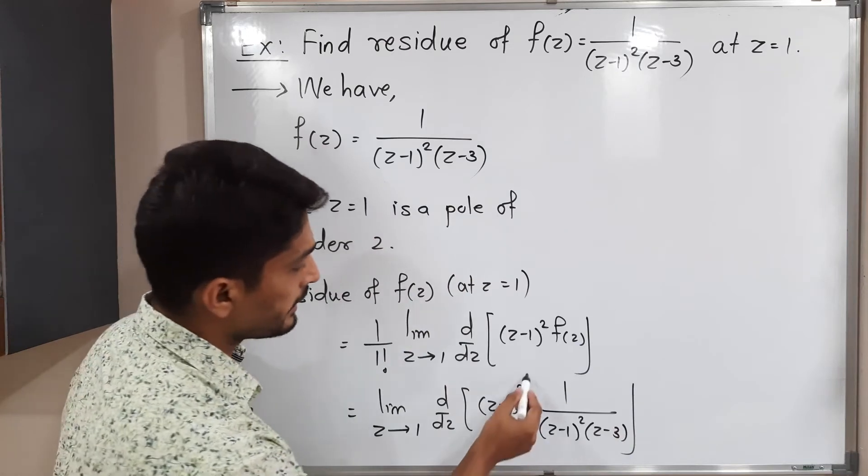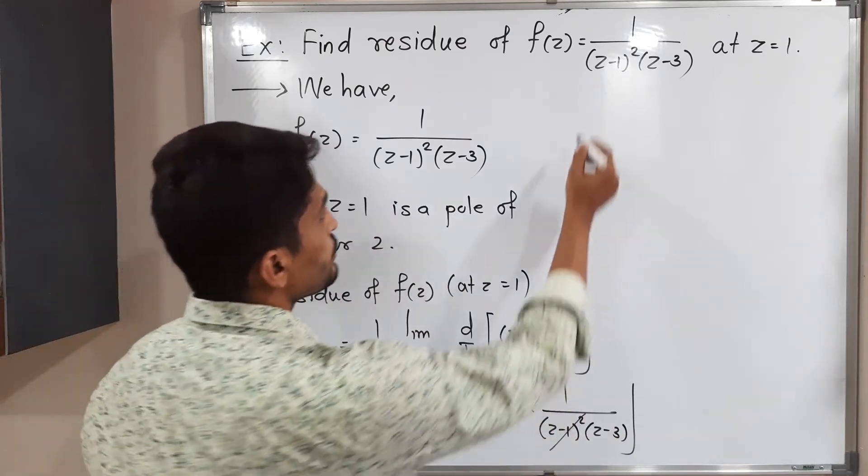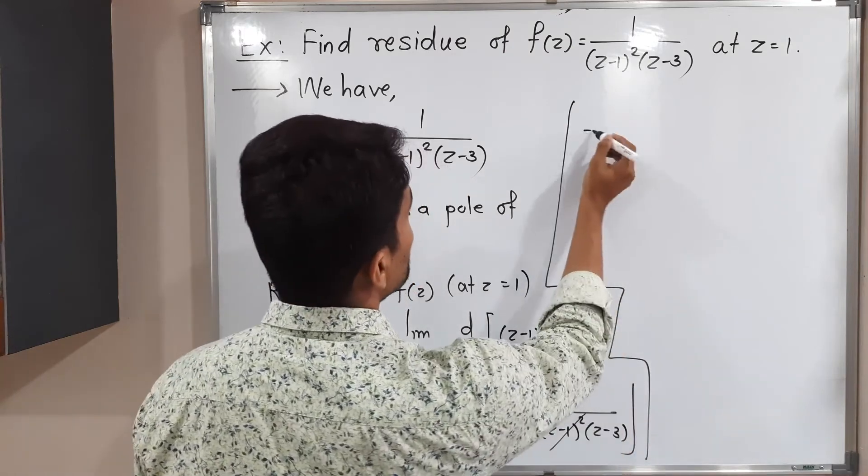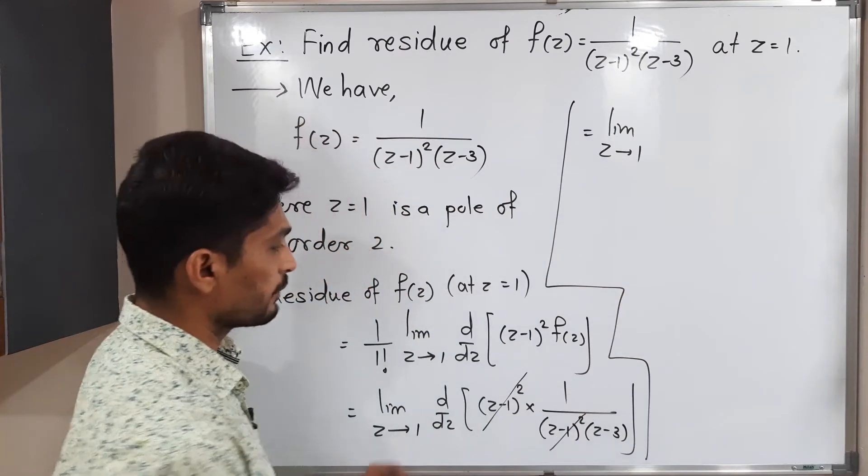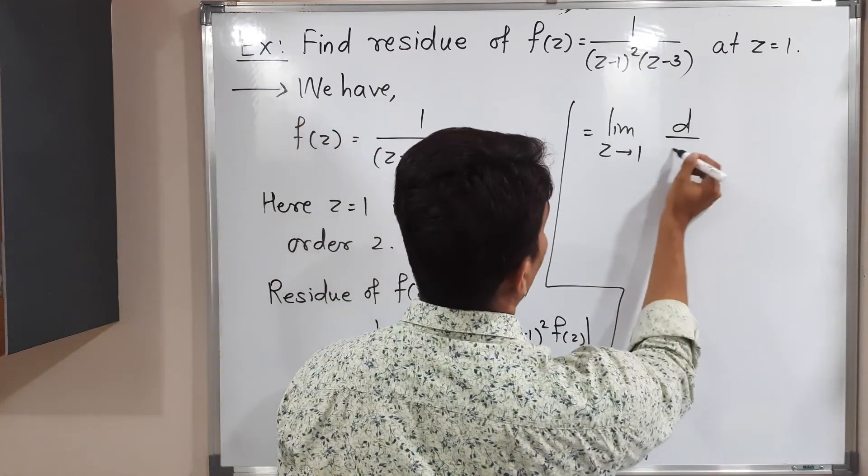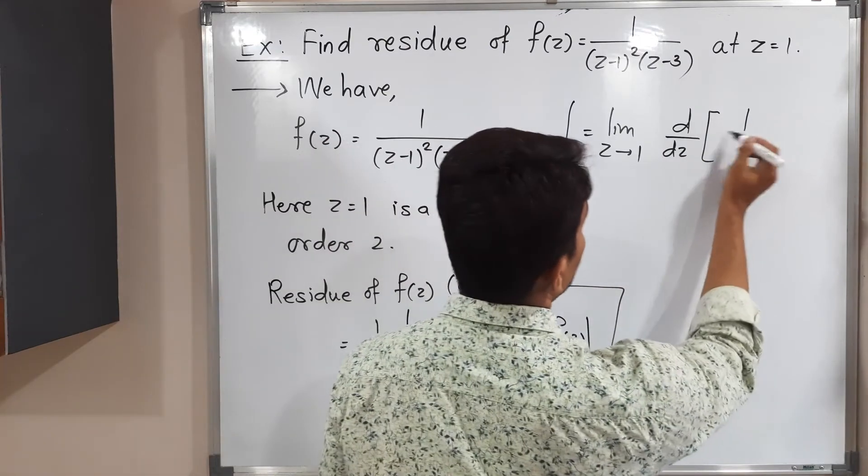What will happen? This (z minus 1) squared and (z minus 1) squared will get cancelled with each other. This is equal to limit z tends to 1. We have to take the derivative of what is remaining in the bracket - only 1 upon (z minus 3).